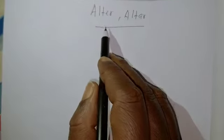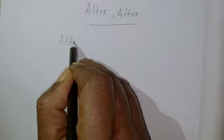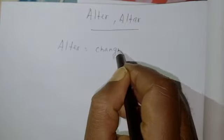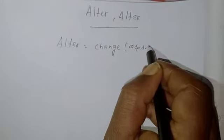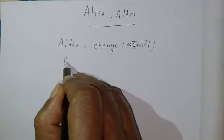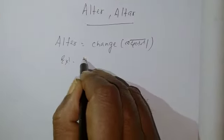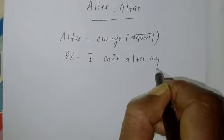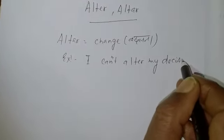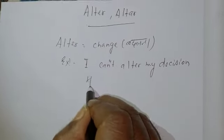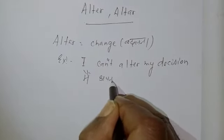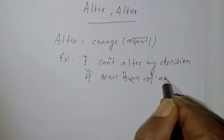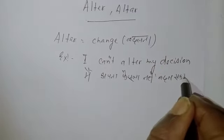The first word, 'alter' (with an 'e'), means change — 'badalna' in Hindi. For example: 'I can't alter my decision.' In Hindi: 'Main apna faisla nahi badal sakta hun.'